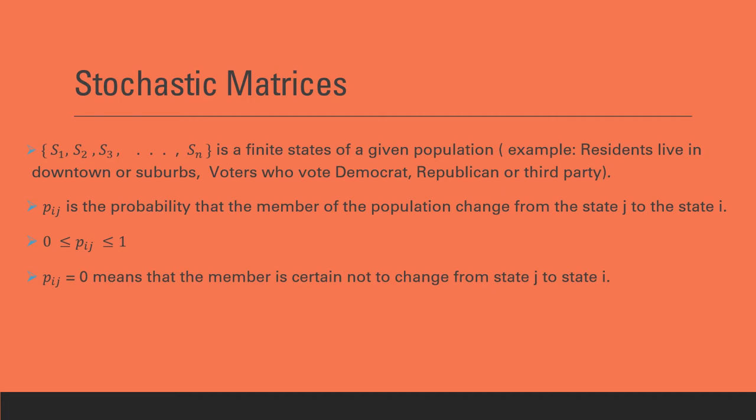If PIJ equals 0, that means the member is certain not to change state J to state I. If PIJ equals 1, that means the member is certain to change state J to state I.